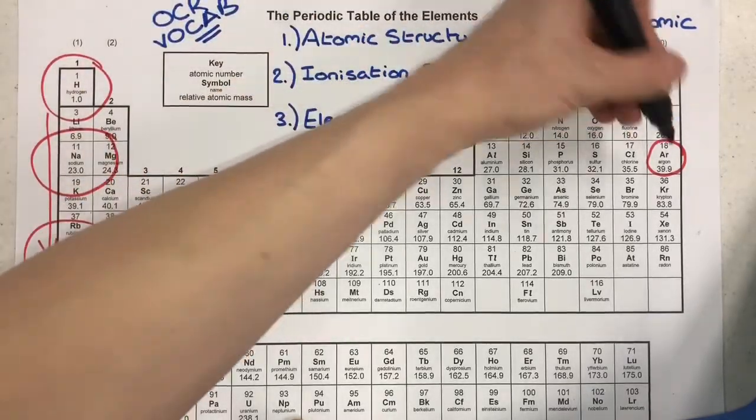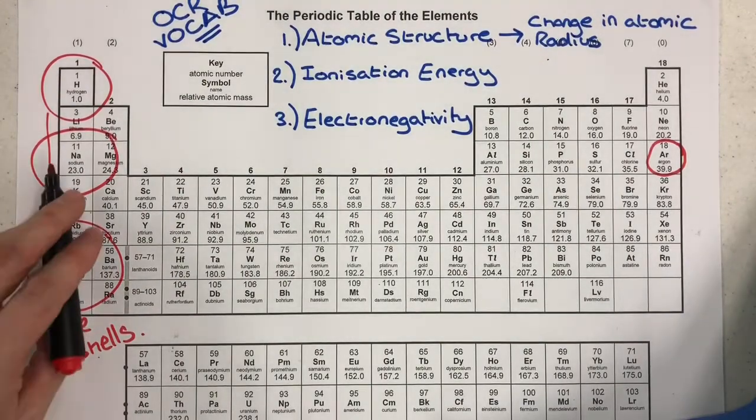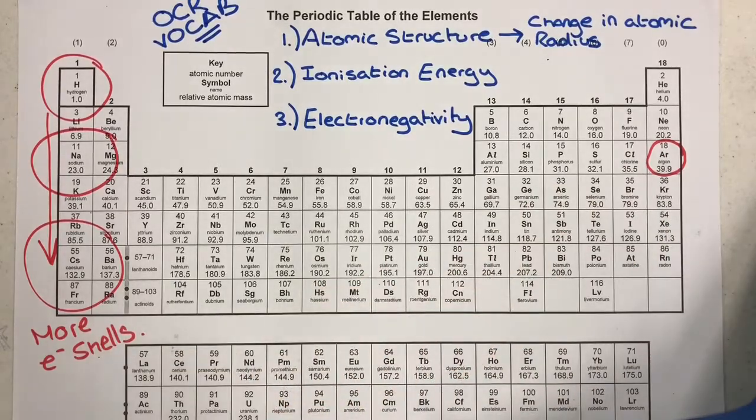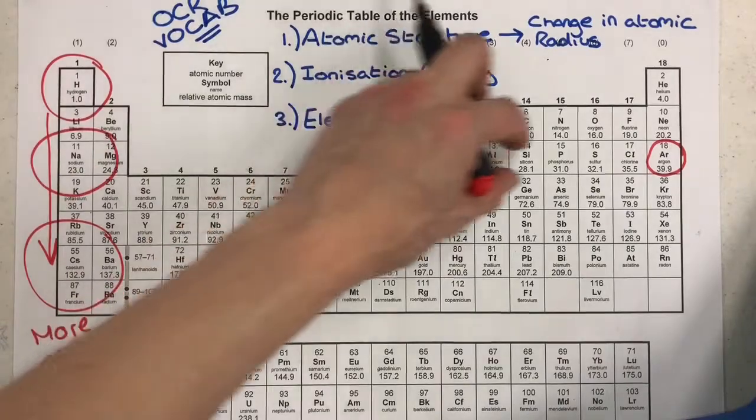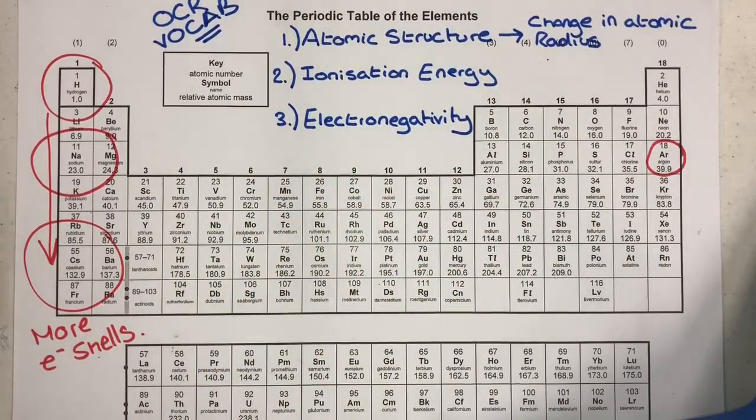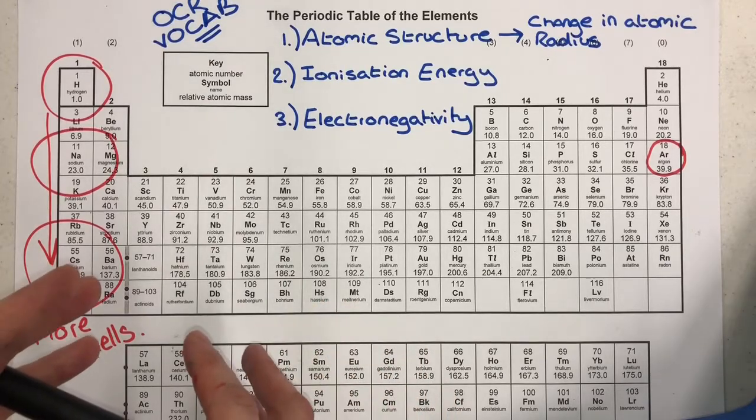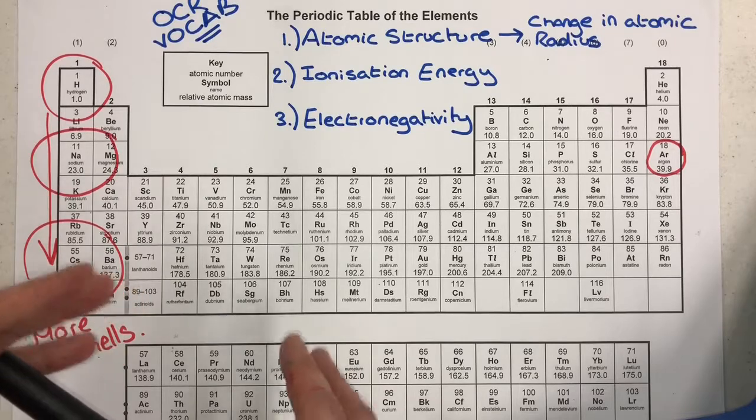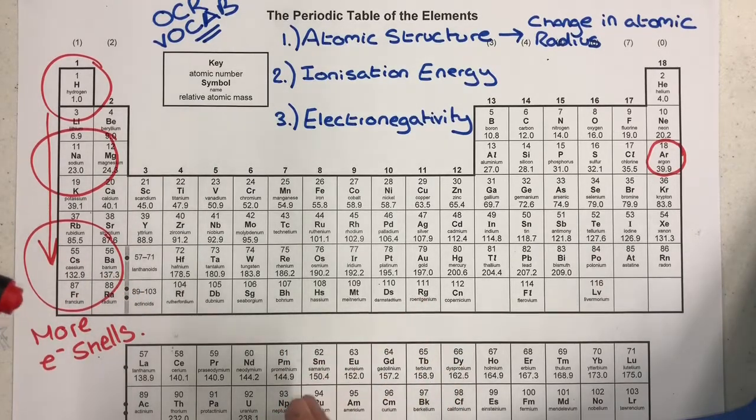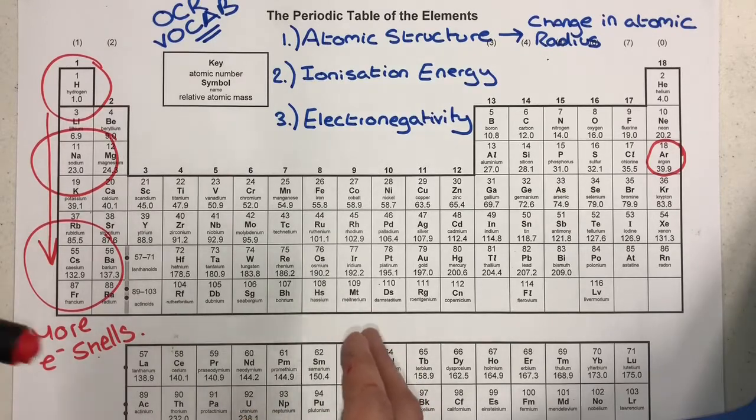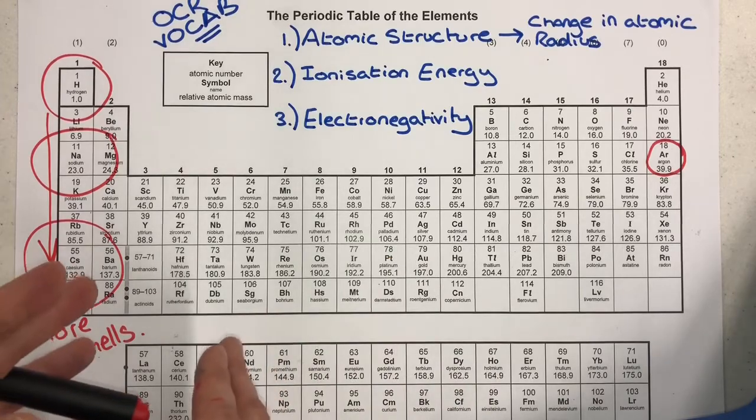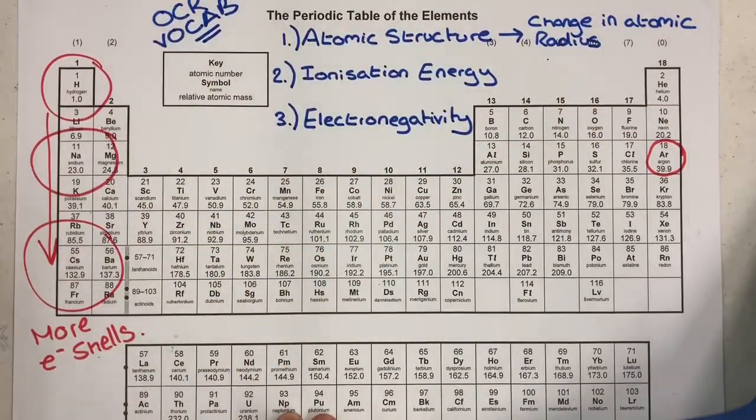What we see is the atomic radius decreases across a period because what we're seeing are more protons going into the nucleus but something called shielding is remaining constant. Now shielding is the effect inner shells of electrons have on the attraction of the nucleus to the valence electron. If shielding is staying constant because all the electrons are going into the same shell, then that attraction between the outermost shell and the nucleus has an opportunity to increase and pull the electrons in closer. Because shielding remains constant, an increase in the protons of the nucleus increases the attraction of the valence shell to the nucleus and they pull closer in. So across the period the atomic radius decreases.